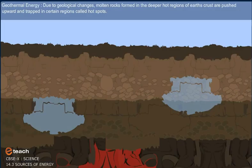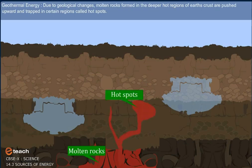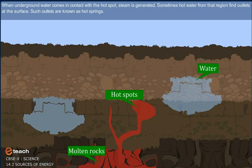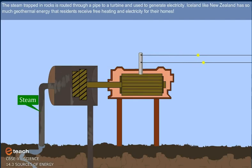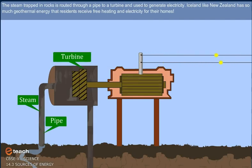Geothermal energy: Due to geological changes, molten rocks formed in the deeper hot regions of earth's crust are pushed upward and trapped in certain regions called hot spots. When underground water comes in contact with the hot spot, steam is generated. Sometimes hot water from that region finds outlets at the surface. Such outlets are known as hot springs. The steam trapped in rocks is rooted through a pipe to a turbine and used to generate electricity. Iceland, like New Zealand, has so much geothermal energy that residents receive free heating and electricity for their homes.